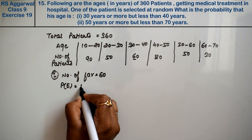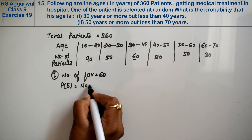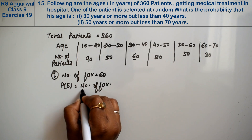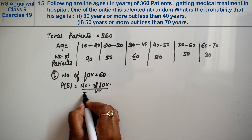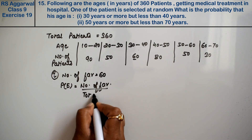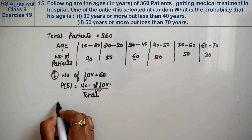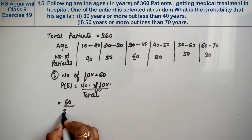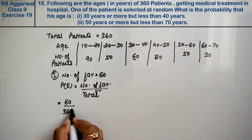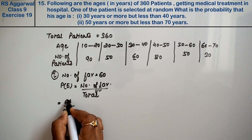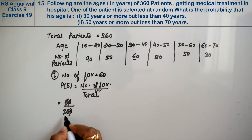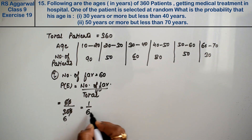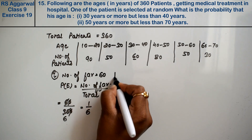Probability equals number of favourable outcomes divided by total. Favourable is 60 and total is 360. So 60 divided by 360 simplifies — 6 divided by 36 is 1 upon 6. The answer is 1/6.